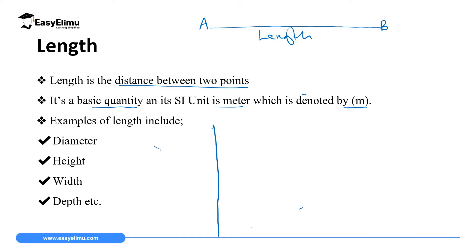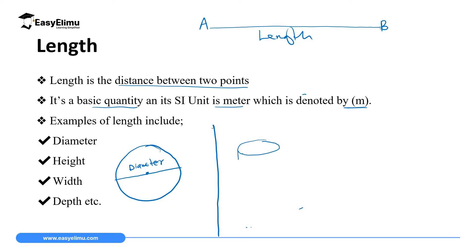Examples of length include diameter and height. A diameter is a line which cuts through the center of a circle from one end to the other. Height is another example — for instance, if you have a cylinder and you measure the distance from the bottom to the top of that cylinder, you obtain the height.